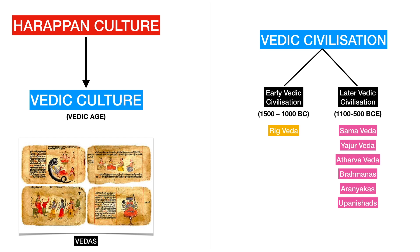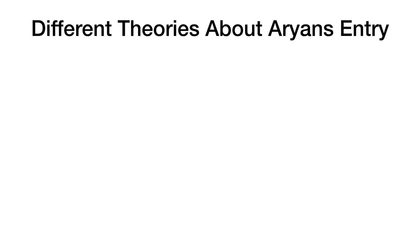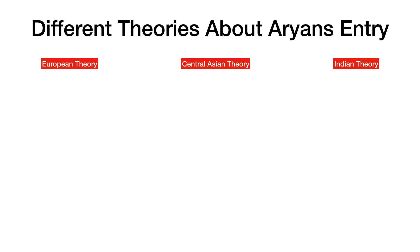To start with Vedic civilization, let us begin with early Vedic civilization. We know that Aryans are the main people of the Vedic civilization. But where did these Aryans come from? There are different theories on how Aryans came to India. The main three theories are the European theory, Central Asian theory, and the Indian theory.